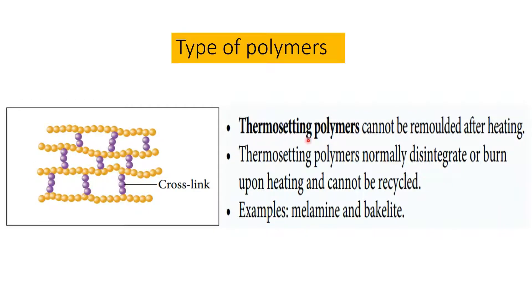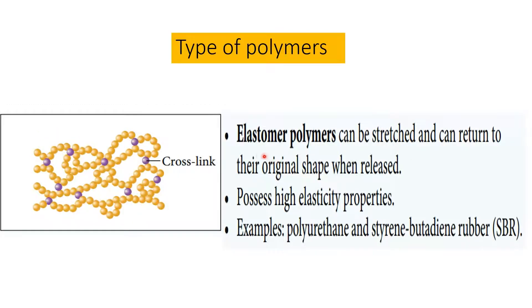The second type is thermosetting polymers, which cannot be remolded after heating. Thermosetting polymers normally disintegrate or burn upon heating and cannot be recycled. Examples include melamine and Bakelite. Melamine is used to make plates and cups — the white round plates commonly seen in canteens are actually melamine.